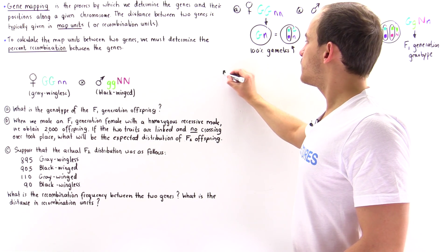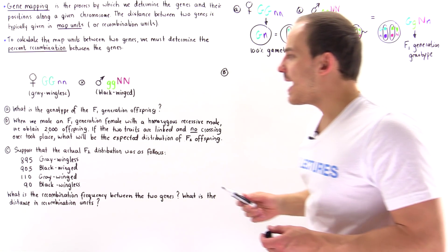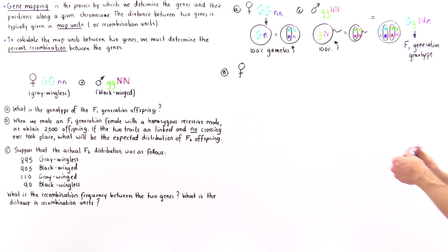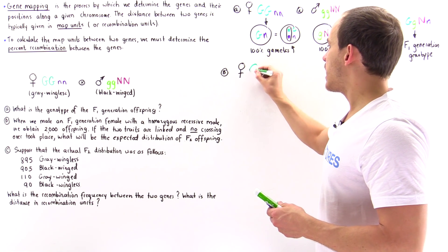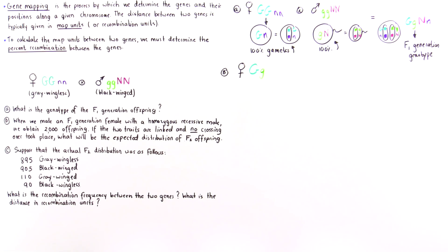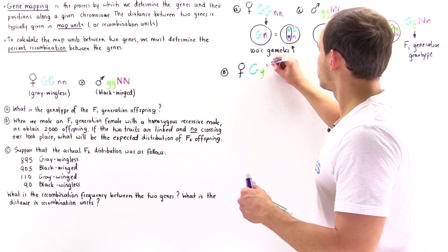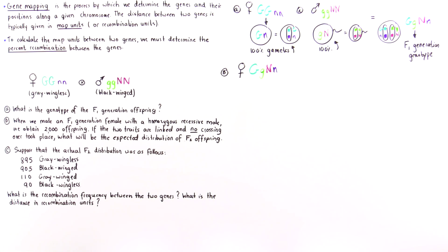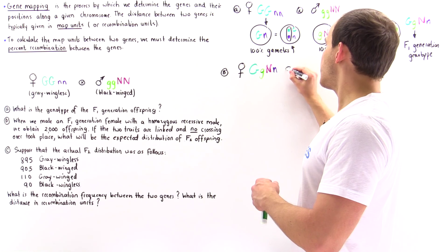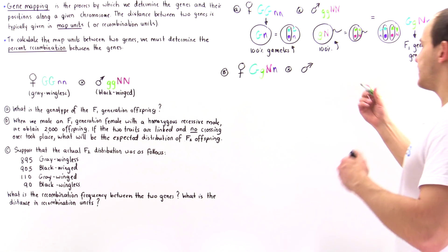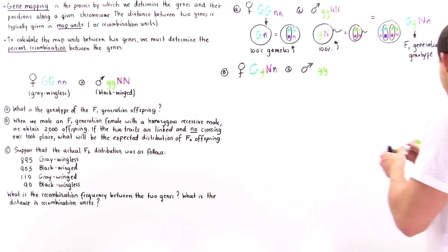Now let's move on to part B. When we mate an F1 generation female — that is, a female with the genotype uppercase G, lowercase g, uppercase N, lowercase n — with a homozygous recessive male that is lowercase g, lowercase g, lowercase n, lowercase n...